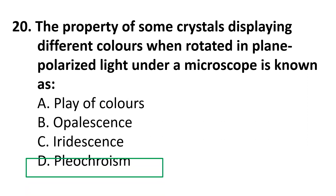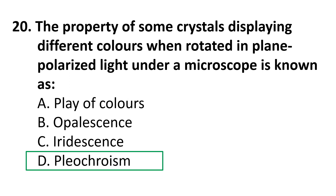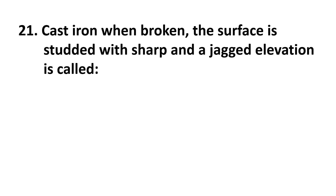Question 20: The property of some crystals displaying different colors when rotated in plane polarized light under the microscope is known as: Play of colors, Opalescence, Iridescence, or Pleochroism. The correct answer is D) Pleochroism.